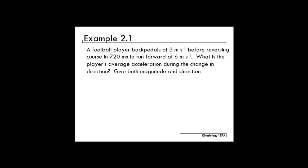In this video, we'll be solving example 2.1. Example 2.1 reads this way: A football player backpedals at 3 meters per second before reversing course in 720 milliseconds to run forward at 6 meters per second. What is the player's average acceleration during the change in direction? Give both magnitude and direction.